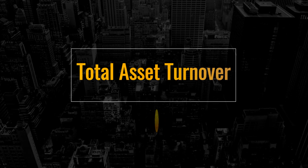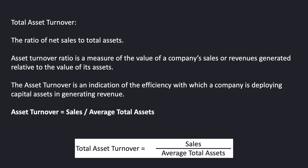Hey everybody, this is Coach D with TackleTrading.com here to help you define total asset turnover. Total asset turnover is the ratio of net sales to total assets. Asset turnover ratio is a measure of the value of a company's sales or revenues generated relative to the value of its assets. The asset turnover is an indication of the efficiency with which a company is deploying capital assets in generating revenue.